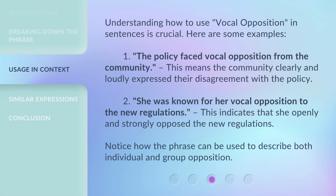Understanding how to use vocal opposition in sentences is crucial. Here are some examples. One: the policy faced vocal opposition from the community — meaning the community clearly and loudly expressed their disagreement with the policy. Two: she was known for her vocal opposition to the new regulations, indicating that she openly and strongly opposed the new regulations.